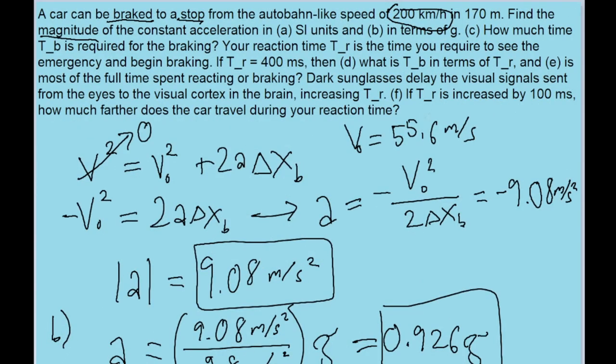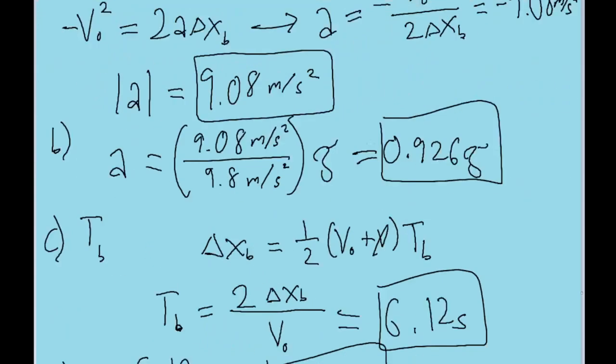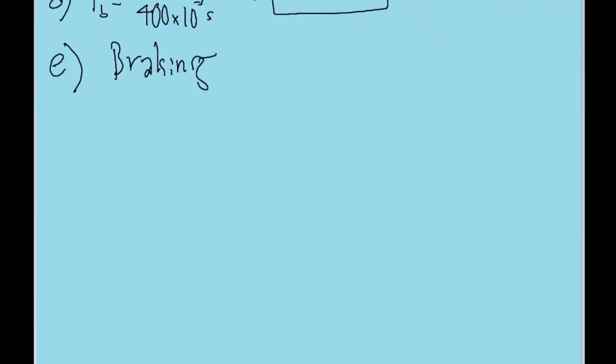And I think lastly we have part F, which asks if T sub R, if the reaction time is increased by 100 milliseconds, how much farther does the car travel during that reaction time? So we're only looking for the increase in time. We're not asked to recalculate anything. We just have to find out how much more time is taken as we're reacting for these 100 extra milliseconds.